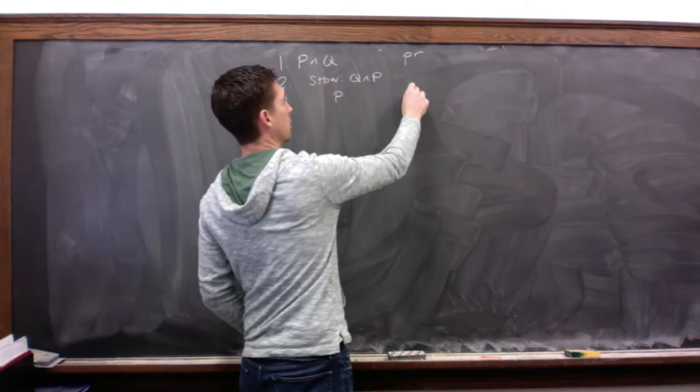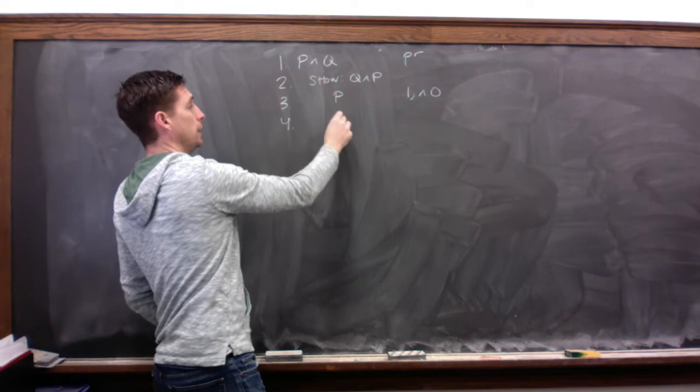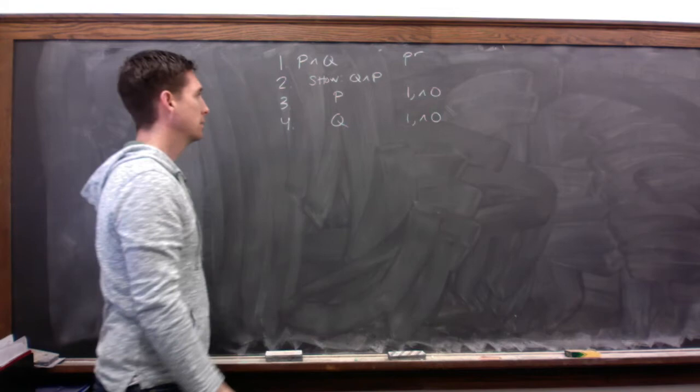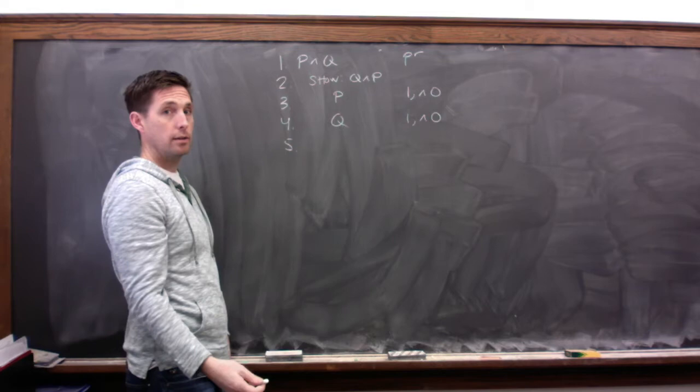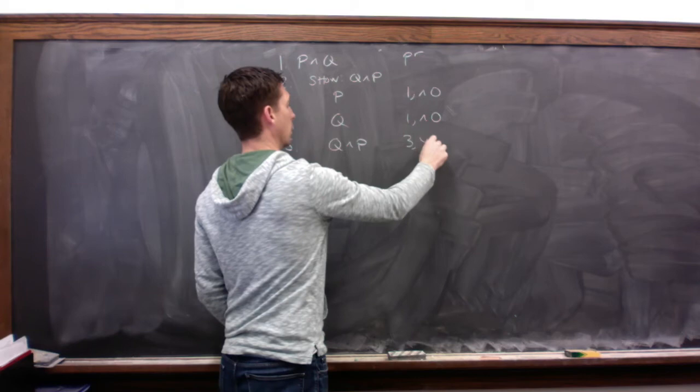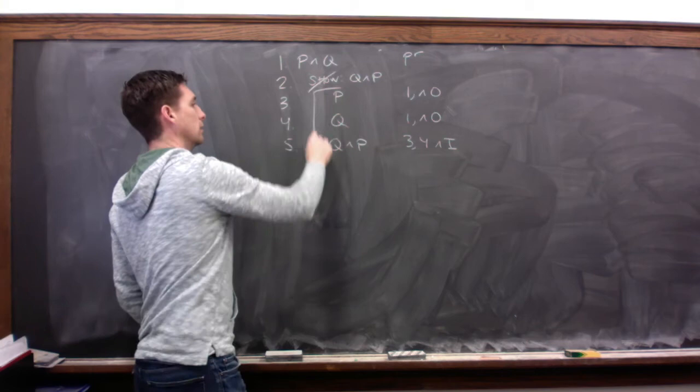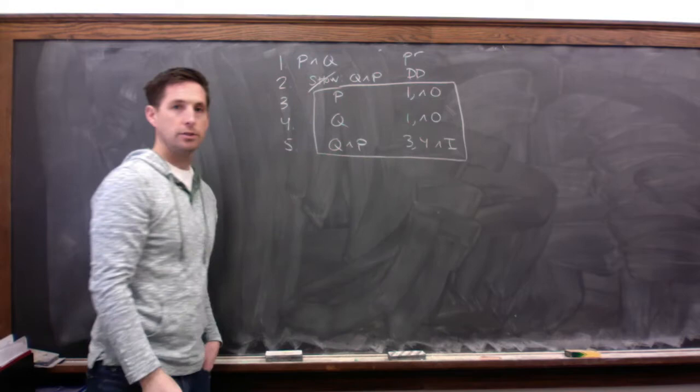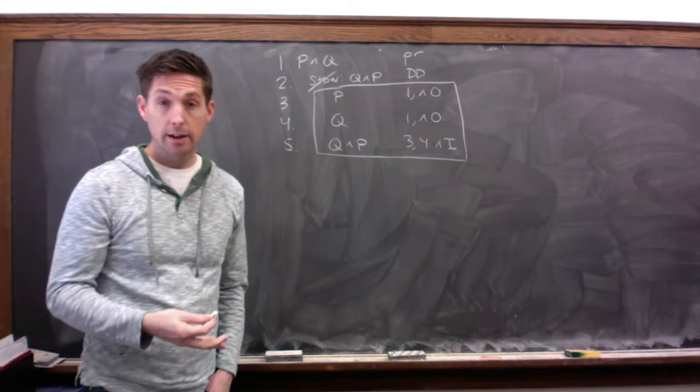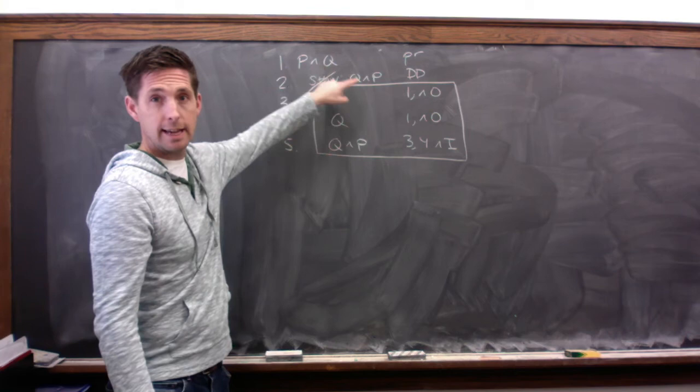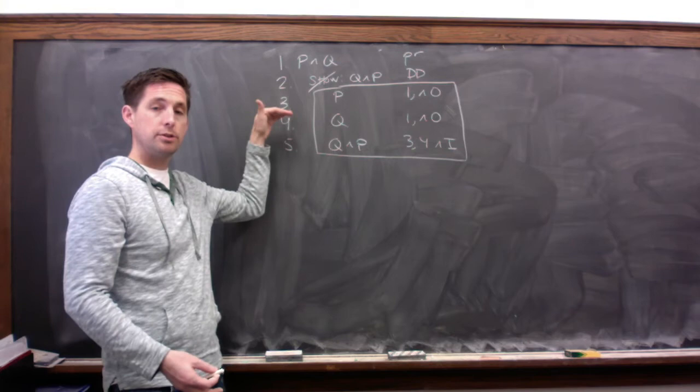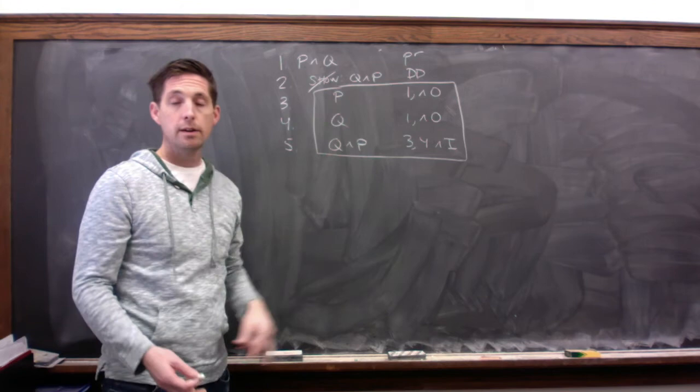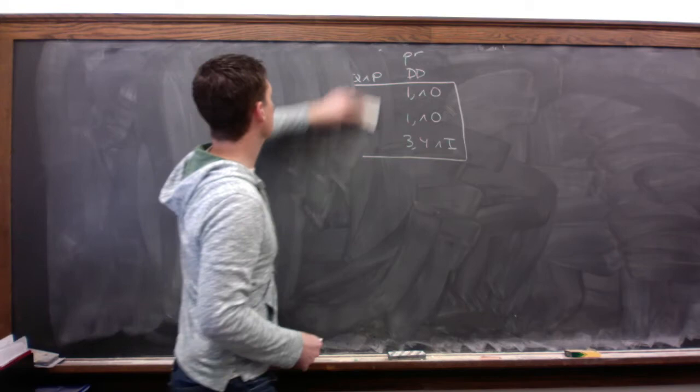Here's how we do that. We say, well, if P and Q is true, then we know P is true. That comes from line one by and out. If P and Q is true, we know that Q is true. That comes from line one by and out. And now and in tells us you can take these two and put them together in any order you want with an and. So we say, okay, Q and P from three and four by and in. And then we cancel, box, and write down direct derivation. I think this derivation is useful to look at because it shows us that even though it's obvious to us that this and this are really just the same formula. To demonstrate it in our system, we still have to go through the steps to show how you get from here to here.